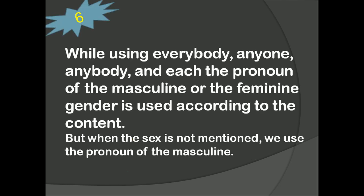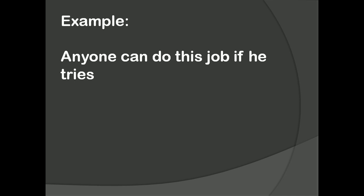Look at the sixth trick. While using everybody, anyone, anybody and each, the pronoun of the masculine or the feminine gender is used according to the context. Generally, we are doing that. But when the sex is not mentioned, we use the pronoun of the masculine. Look at the example. Anyone can do this job if he tries. Why? Because anyone is given. The sex is not mentioned over here. So, we have to use masculine pronoun here.